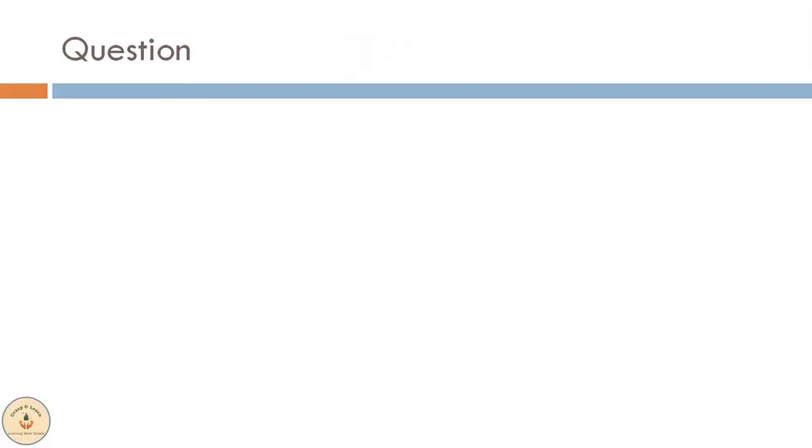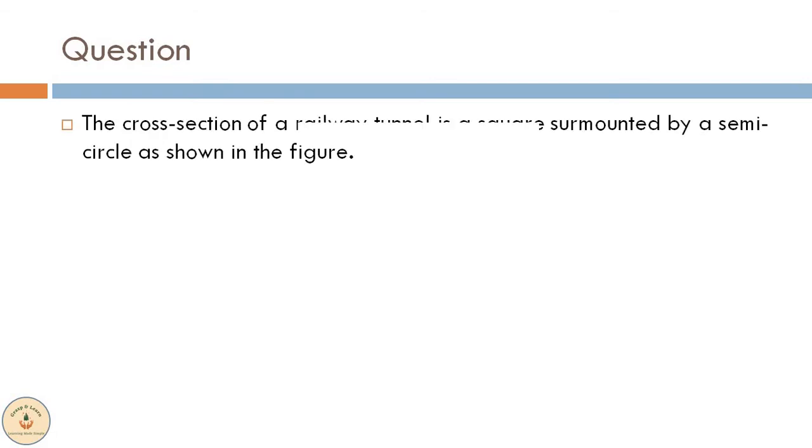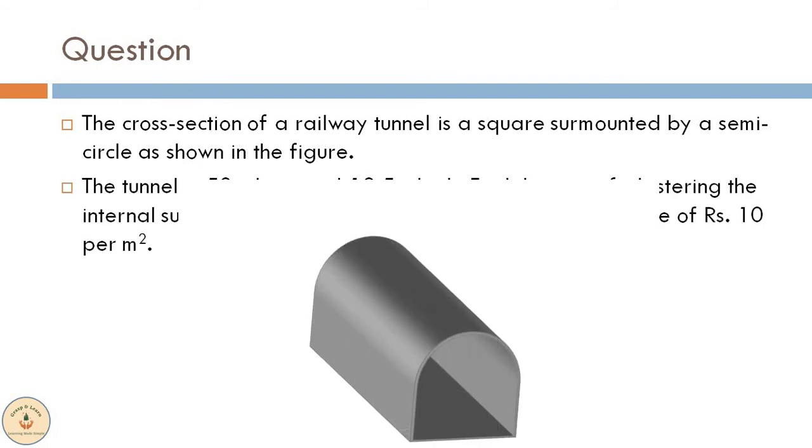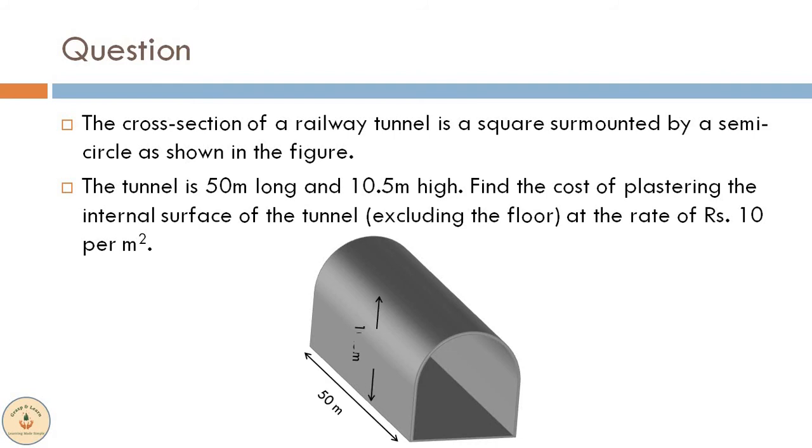The question given to us is as follows. The cross section of a railway tunnel is a square surmounted by a semicircle as shown in the figure. The tunnel is 50 meters long and 10.5 meters high. Find the cost of plastering the internal surface of the tunnel excluding the floor at the rate of Rs 10 per meter square.